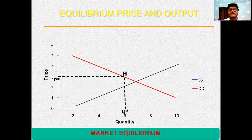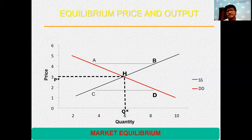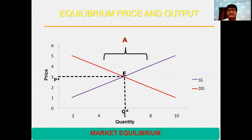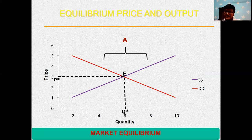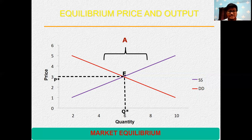Let me show the same thing with a diagram. The demand curve is a downward sloping curve — that red line. The black line is an upward sloping supply curve. On the y-axis we have price, on the x-axis we have quantity demanded and quantity supplied. Whenever the demand curve intersects the supply curve — whenever these two curves cut each other — that situation is called the equilibrium situation. Both curves are equal to each other at that intersection point, and that point is called point E.